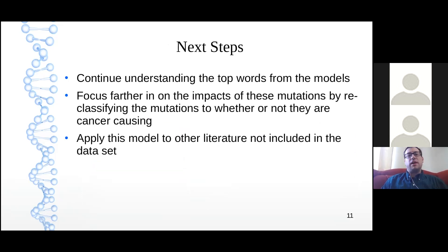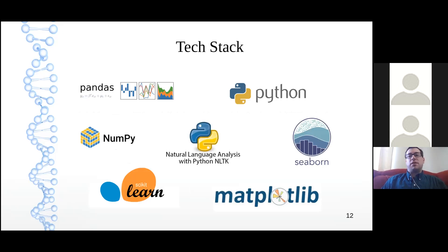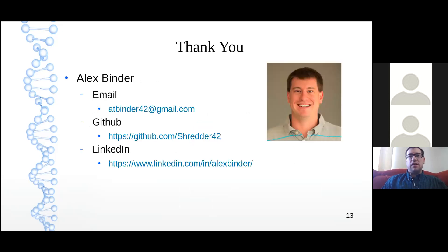That's where I'm at for now, but I have many next steps and ways to take this forward. There were several words in there that I want to dive into a little bit more and understand why those were the top words from the model. I want to focus further in on the impact of the mutations by reclassifying them to whether or not they are cancer-causing. And finally, I'd like to apply this model to other literature that wasn't necessarily included within this dataset. I use a standard Python tech stack with standard Python libraries, focusing on NLTK and scikit-learn to build my models. And with that, that's my presentation.